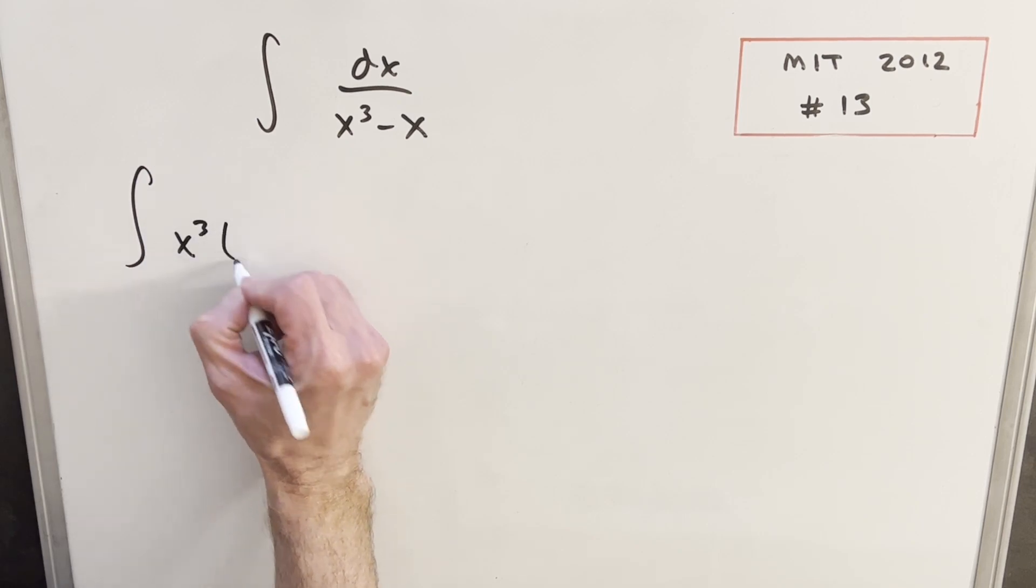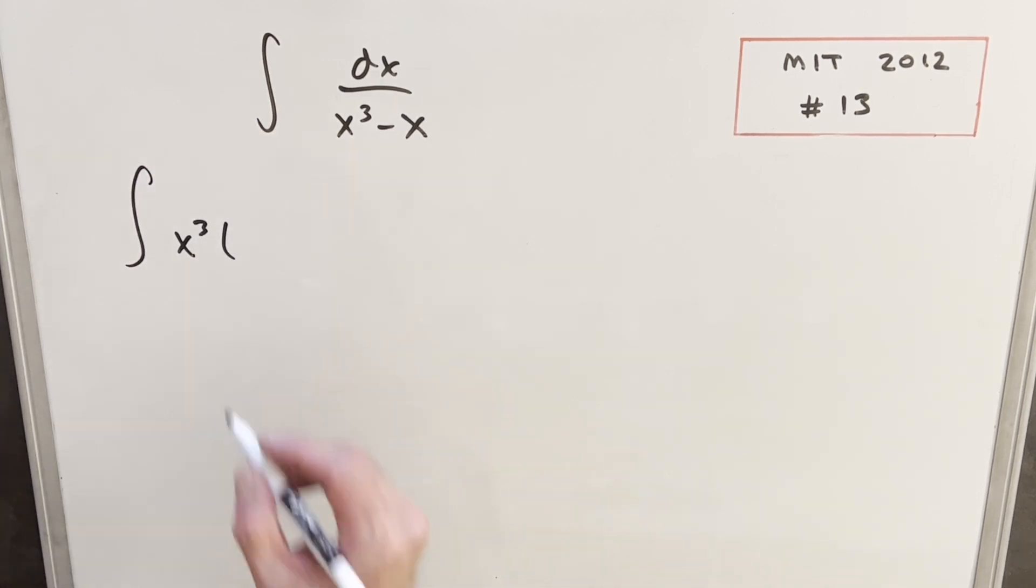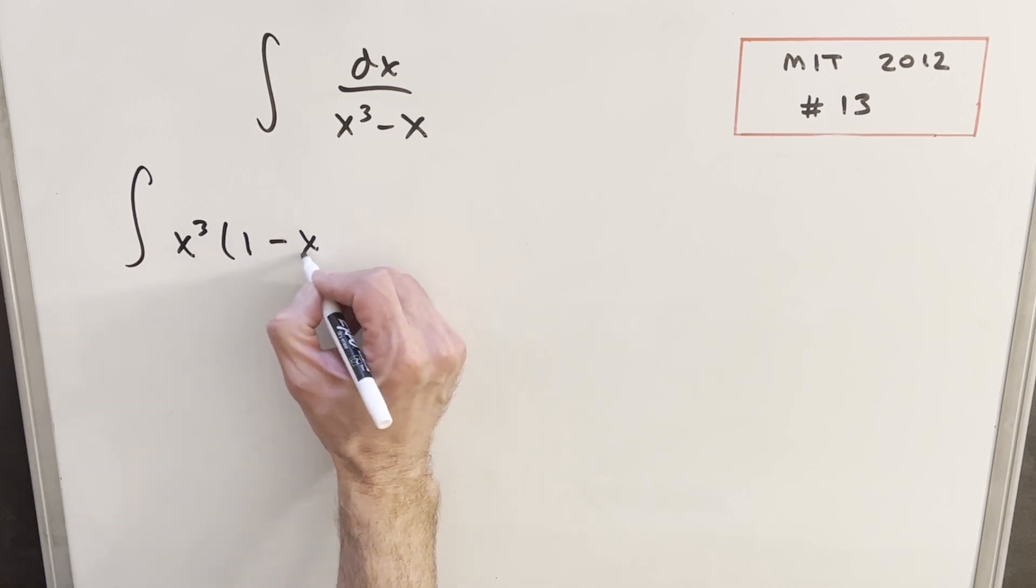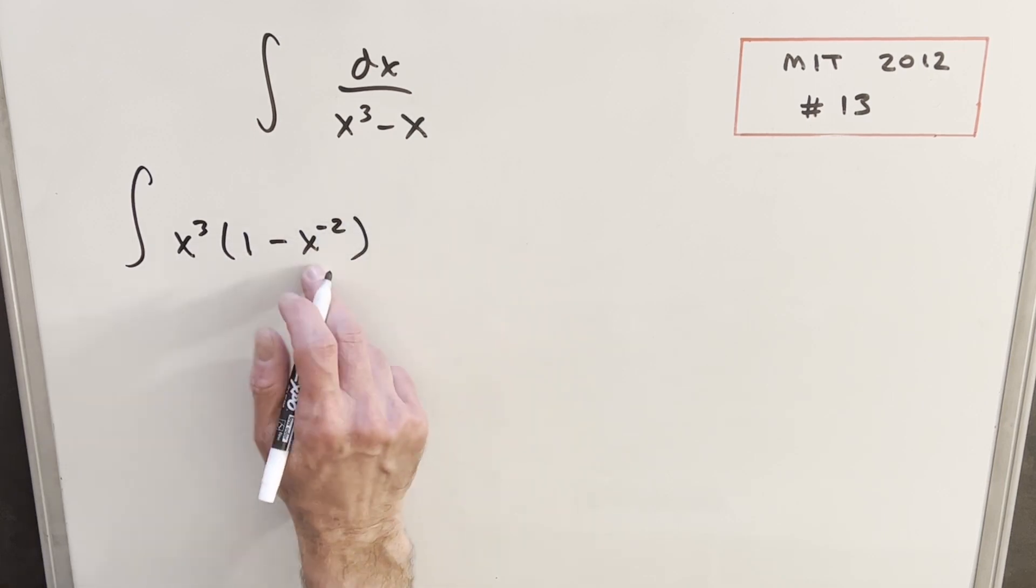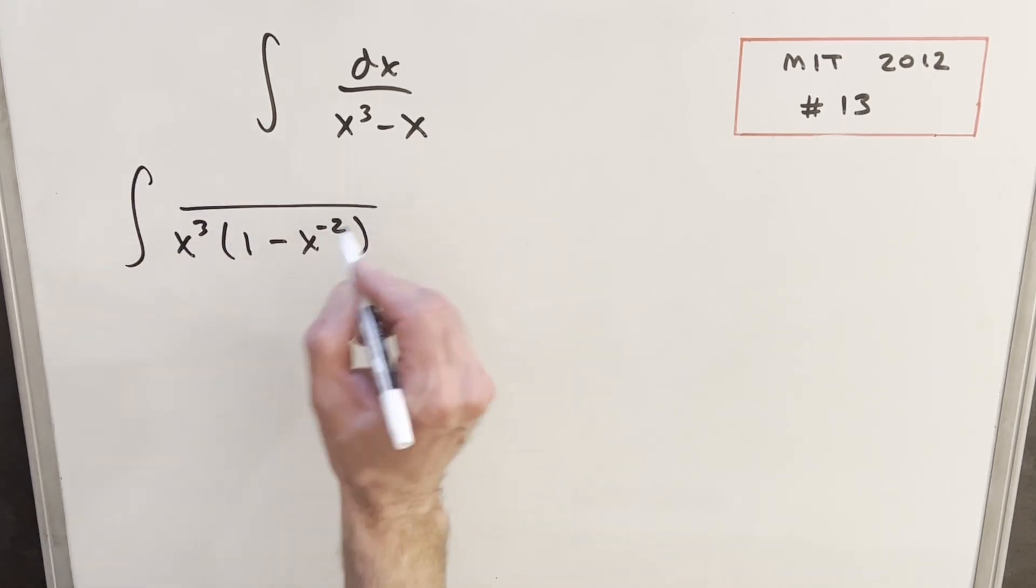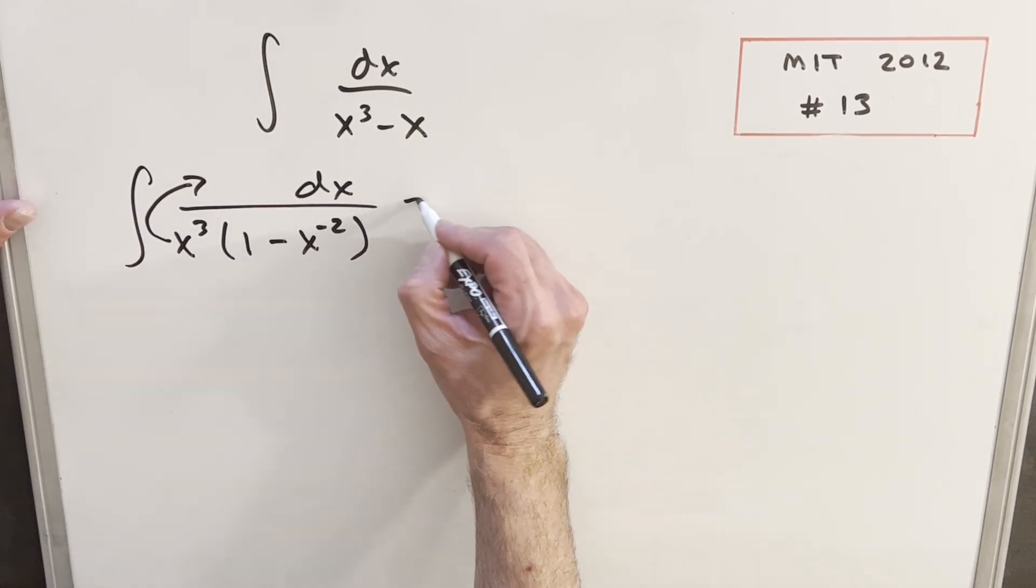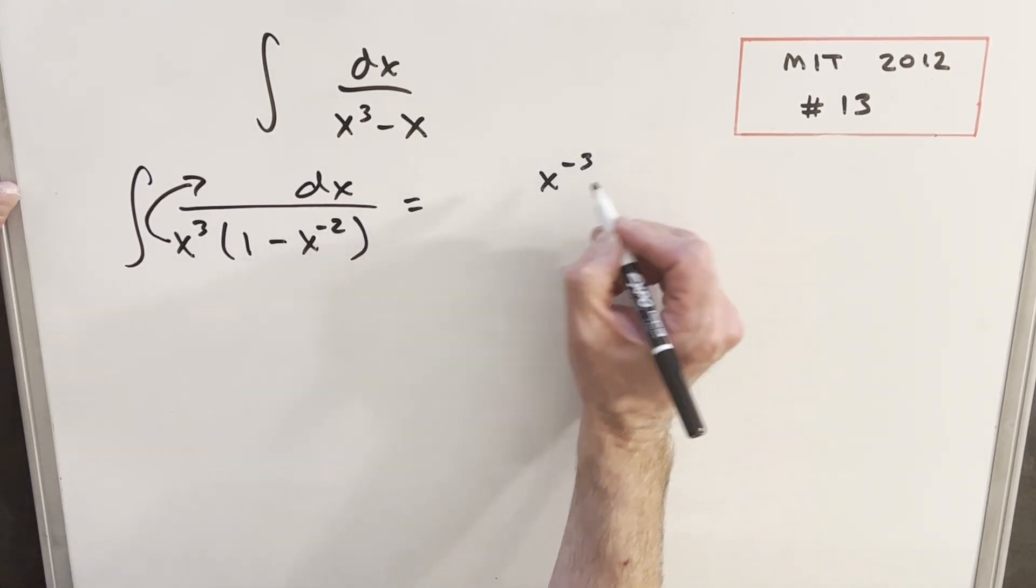If I factor out x cubed, inside the parentheses we can have 1 minus x to the minus 2. Just noticing x to the minus 2 times x cubed gives us our x. And then all I'm going to do here is just bring my x cubed into the numerator. So we'll rewrite that as x to the minus 3.